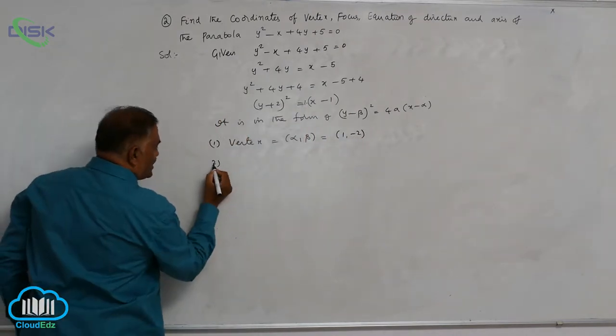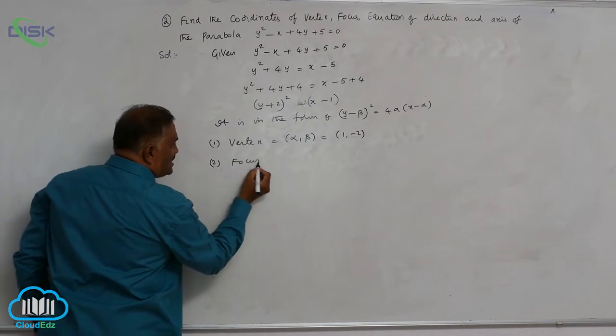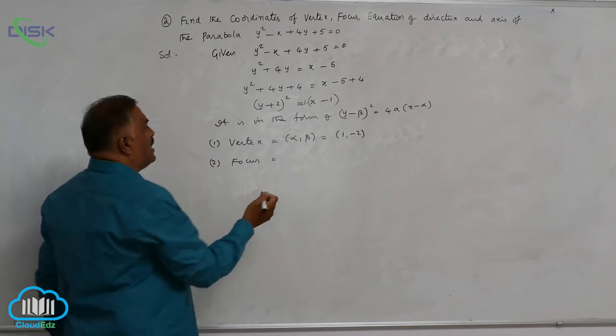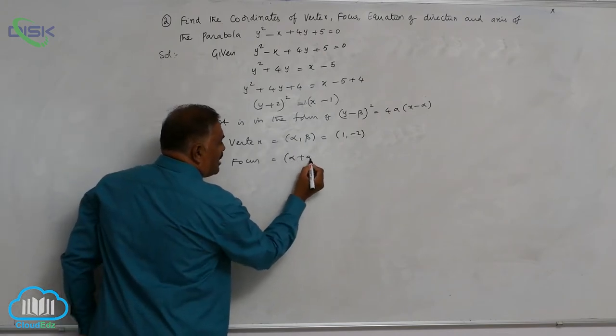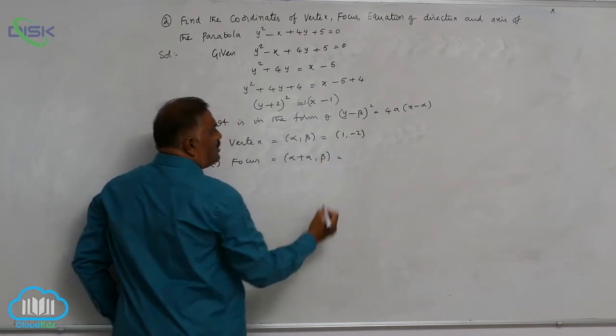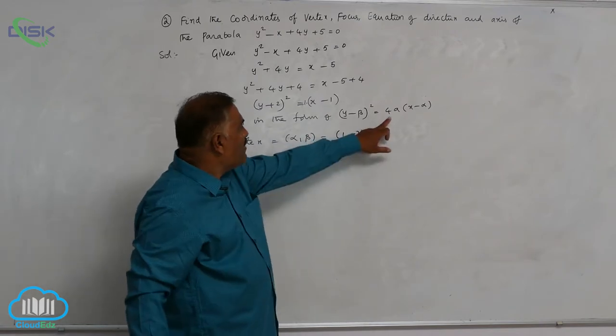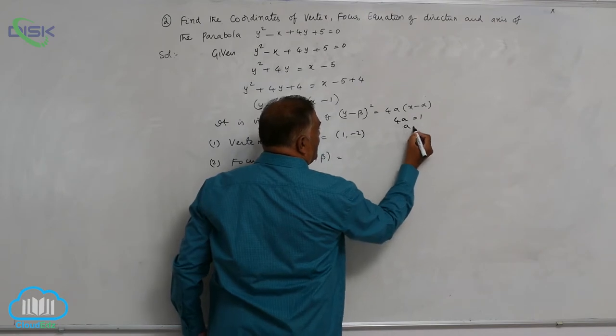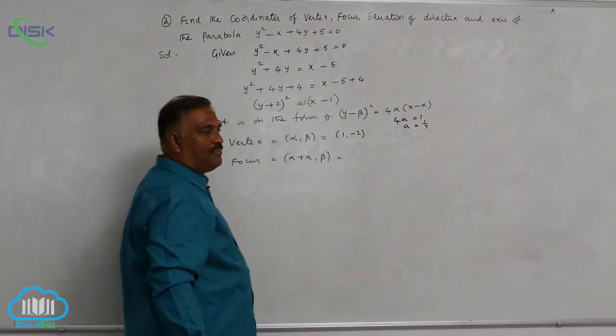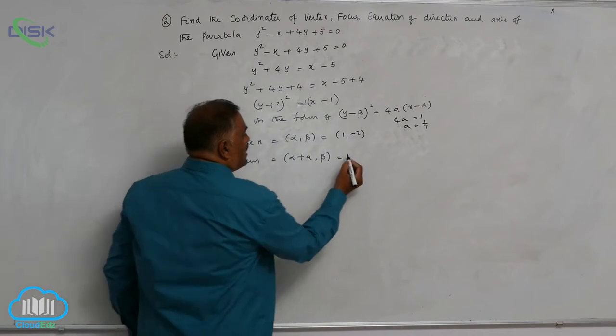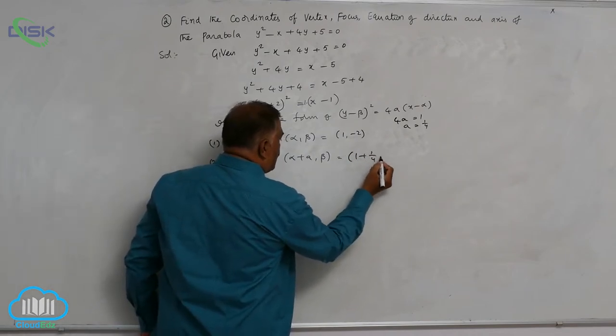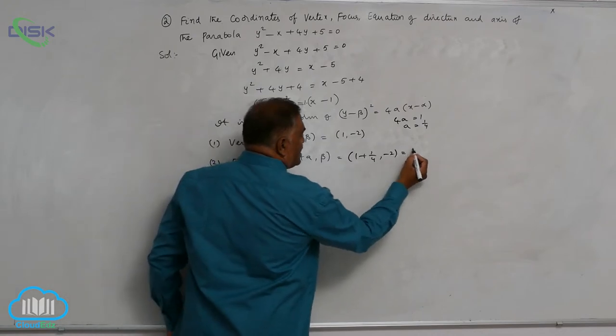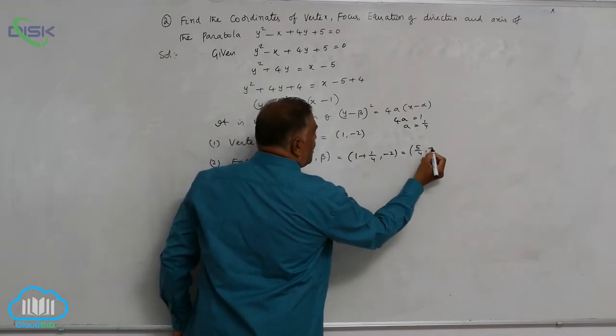Then comes focus. Focus is equal to, for this parabola, alpha plus a comma beta. Before this, 4a value is equal to how much? 1. So 4a is equal to 1, a is equal to 1 by 4. Now substitute here. This is 1 plus 1 by 4 comma minus 2. 1 plus 1 by 4 makes 5 by 4 comma minus 2.